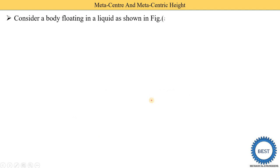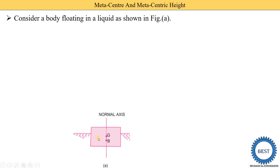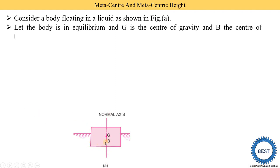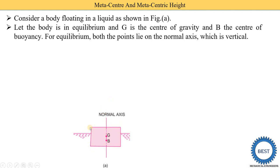First we consider this floating body as shown in the figure. Here we see two points: one is the g point — g means it is the center of gravity point, and at this point the whole weight of the body is concentrated. The second point is the b point — b is the center of buoyancy, meaning the buoyant force is acting at point b. It has a normal axis, which is perpendicular to the body. The body is currently in an equilibrium state. For equilibrium, both points g and b lie on the normal axis, which is vertical. This condition is fulfilled in this diagram.